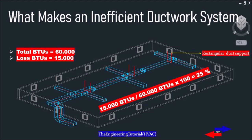Let's say the system we design loses 15,000 BTUs of heat as air moves through the supply and return of that system. This might be due to the defects just mentioned. So: 15,000 BTUs of heat loss divided by 60,000 BTUs, multiplied by 100, equals 25% heat loss. This means the duct system is only 75% efficient at best.